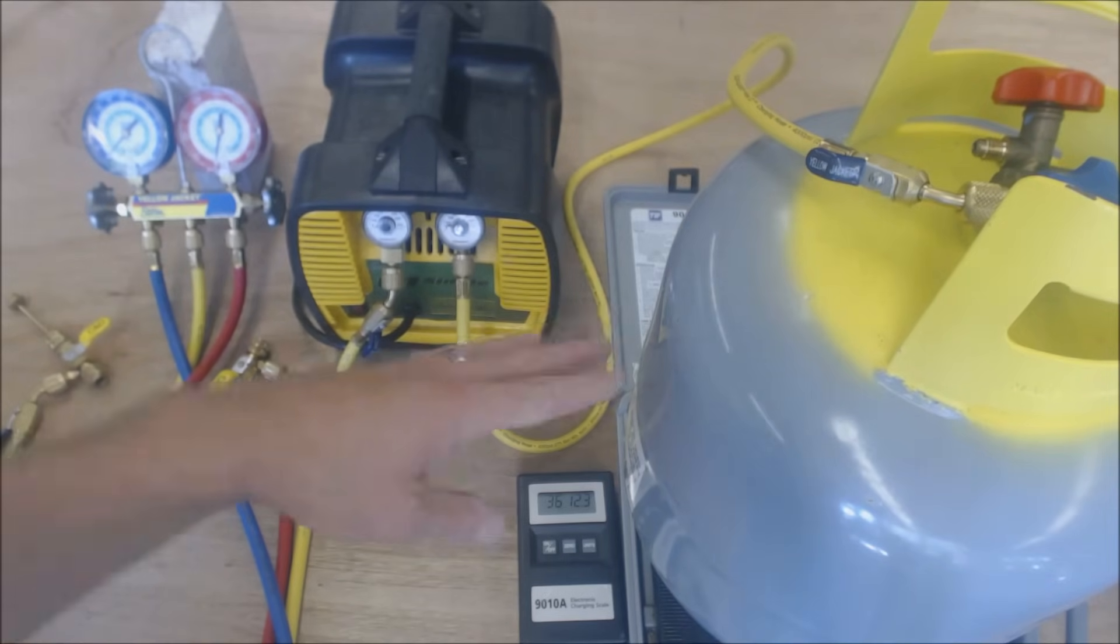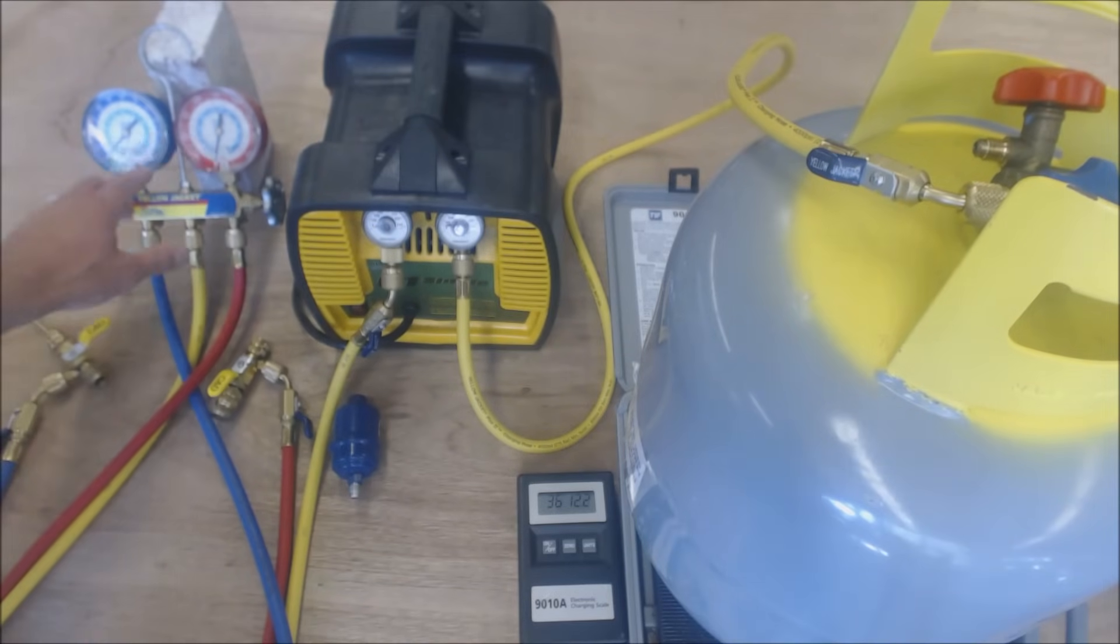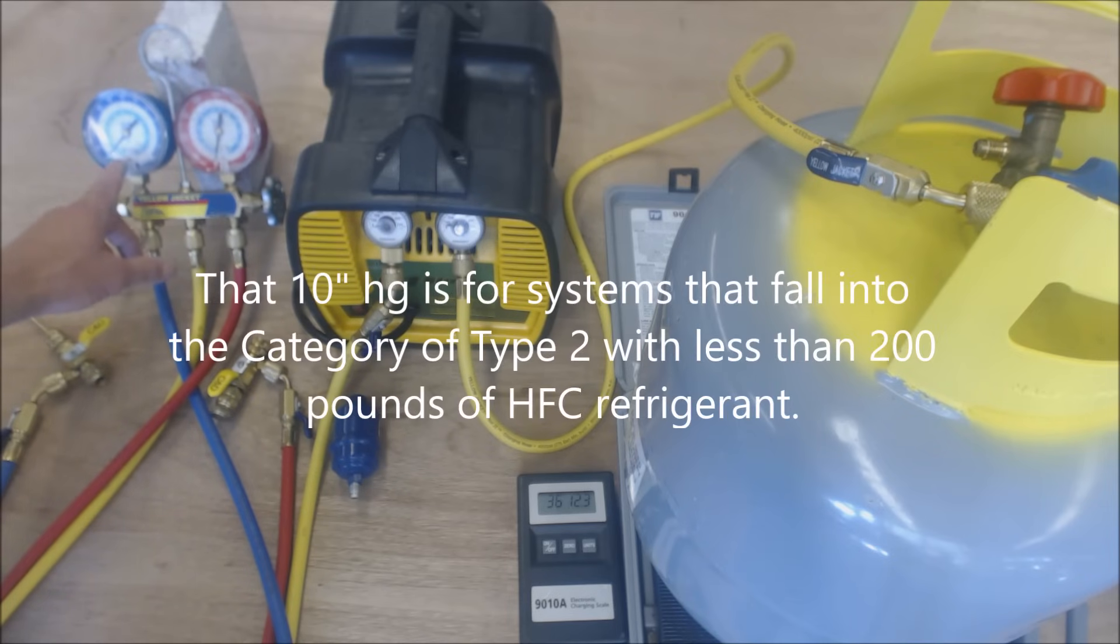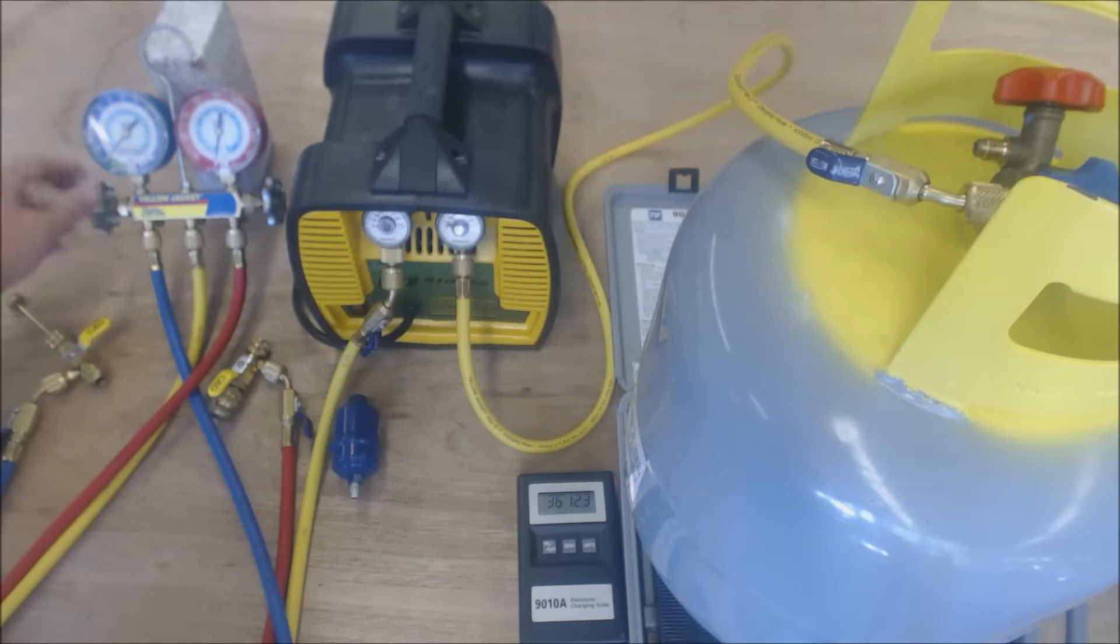Since this is 134A refrigerant that we're dealing with here, when we recover the refrigerant out of the system, we're going to end up recovering it down to 10 inch Hg—down into the green. We need to be able to hold that. So basically while the recovery system is running and it's putting refrigerant into the bottle, we can just close this handle down temporarily just for half a second and just check to see where this needle rises up to. If it rises up past 10 inch Hg, we're just going to open it and continue to let it suck down to 10 inch Hg.